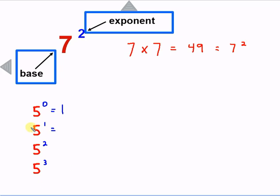Now any number raised to the first power is going to be itself. So in this case 5 to the first power is 5. 6 to the first power would be 6, 7 to the first power would be 7, etc. That is essentially 5 one time.